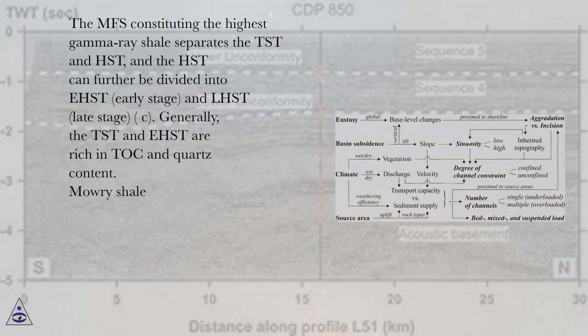The MFS constituting the highest gamma-ray shale separates the TST and HST, and the HST can further be divided into EHSD (early stage) and LHSD (late stage). Generally, the TST and EHSD are rich in TOC and quartz content.